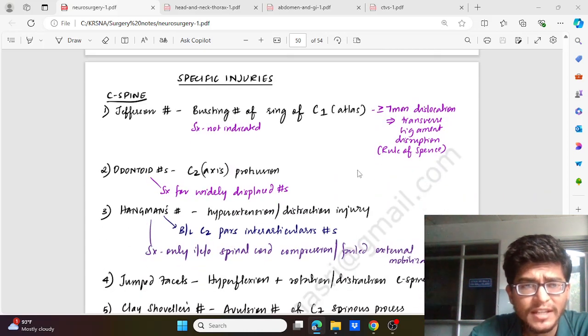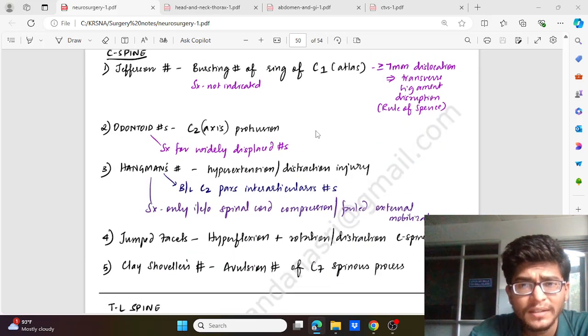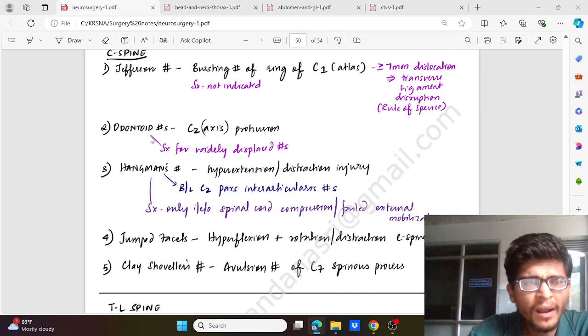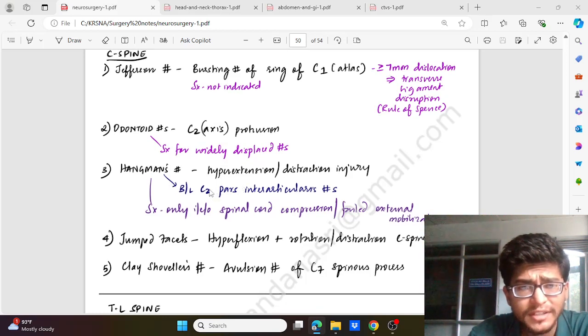Then some specific injuries like the Jefferson fracture where there is bursting of the ring of atlas of the cervical spine C1 - generally surgery is not indicated. In the odontoid process fracture C2 axis protrusion, surgery is needed for widely displaced fracture. In hangman's fracture due to hyperextension or distraction injury, it is due to the C2 pars interarticularis fracture. Only if there is spinal cord compression or failed external mobilization, we go for surgery.